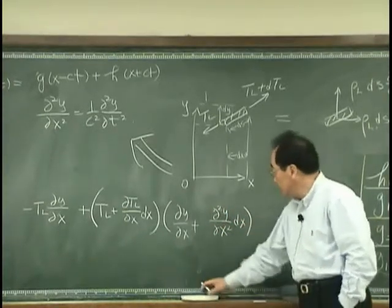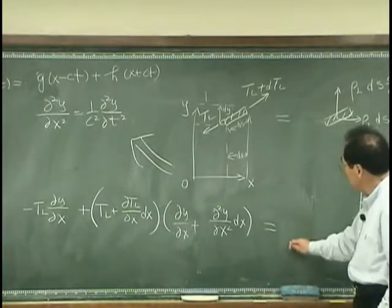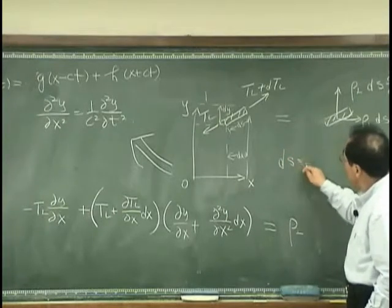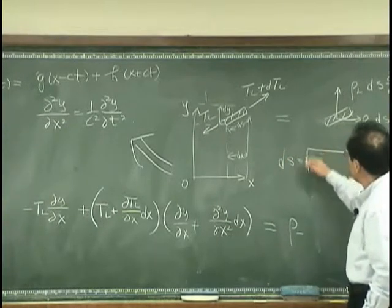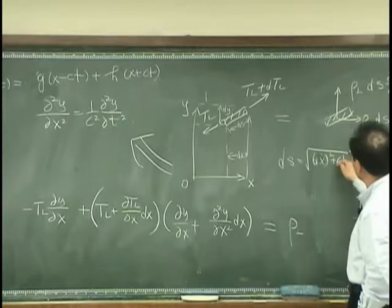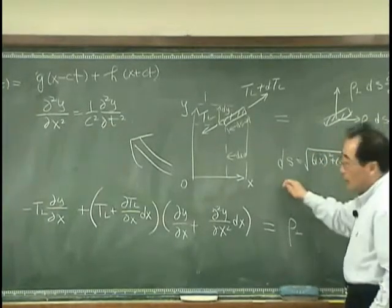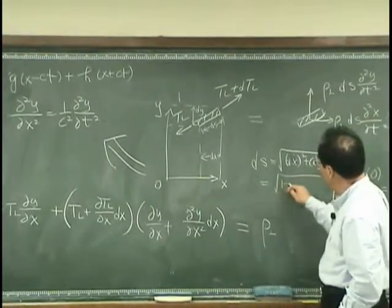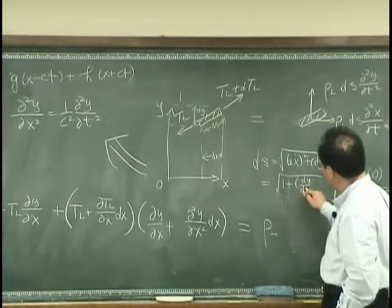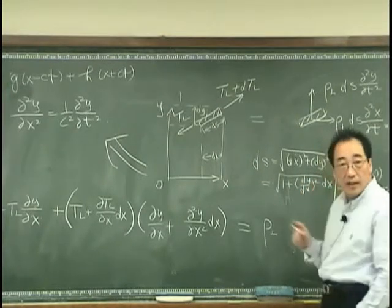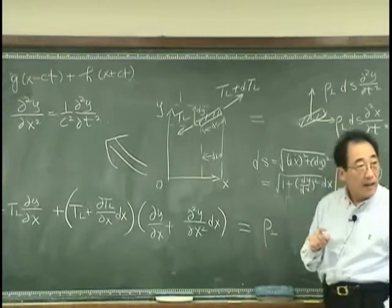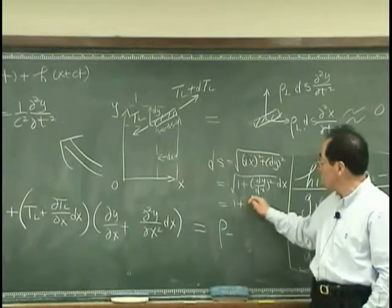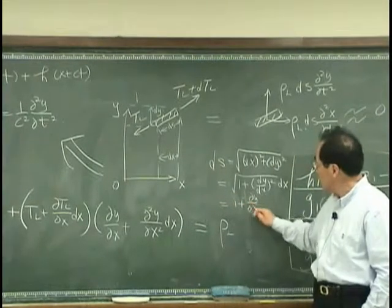Okay? That has to be balanced by rho L and ds is square root dx square plus dy square. I can say this is 1 plus dy dx square. I can say this is 1 plus dy dx square dx, and this is approximately 1 plus dy dx dx.